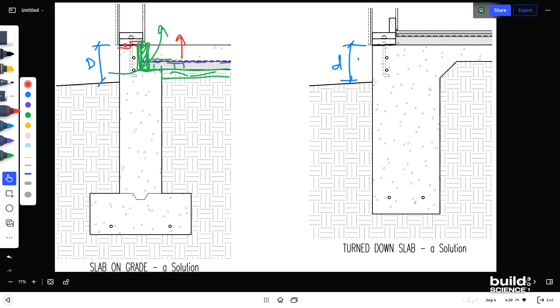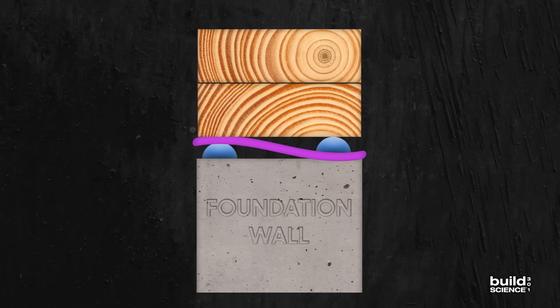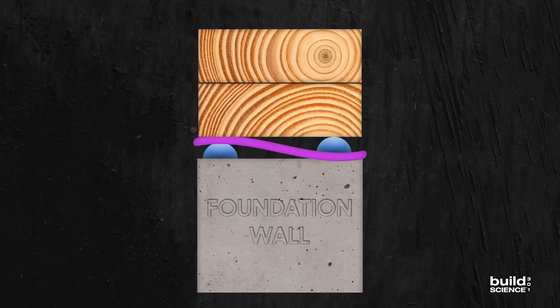And then as far as air sealing, we use that same detail. So we'll put the bead of sealant on top of the sill sealer and below the sill sealer. I call it the Z sandwich.